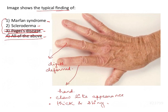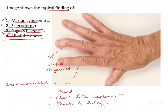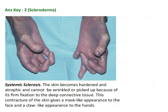That leaves us with Marfan syndrome and Scleroderma. Marfan syndrome has very typical classic hallmark features — not claw-like hands, but arachnodactyly, which will be shown subsequently in the explanation. But these claw-like hands are very typical of scleroderma.